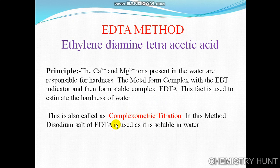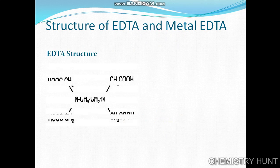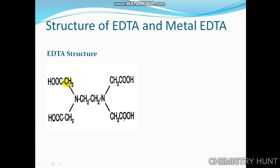In the EDTA method, we use the disodium salt of EDTA because it is soluble in water. Looking at the structure of EDTA, we can see ethylene — that is CH₂CH₂ — diamine, with two nitrogen atoms. Ethylenediamine tetra means four acetic acid groups, giving us ethylenediamine tetraacetic acid.